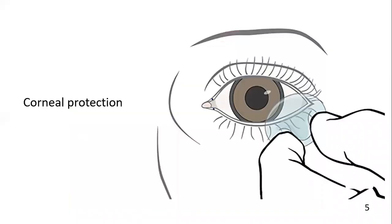Corneal protection is achieved with specialized shields, or at a later stage of the procedure with sutures connecting the cephalic edge of the conjunctiva with the upper lid.